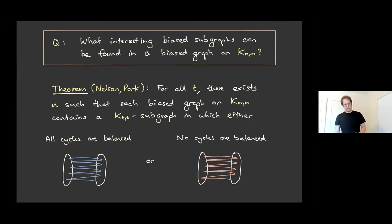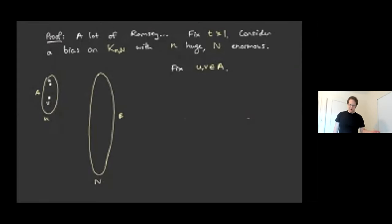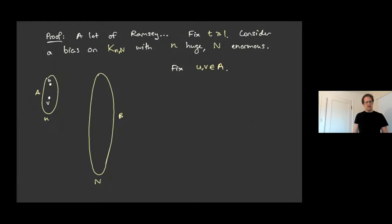I want to talk about how to prove this, because I think it's independently interesting — what do you get when you ask Ramsey questions for bias graphs? The proof isn't doing Ramsey theory in the usual way. In the usual way, you take a complete graph and assign a color to each edge. Here we're assigning a color to cycles in a way that obeys a certain property. We can't just apply Ramsey theory and be done, but we can apply Ramsey theory — we apply the usual Ramsey theorem for edge colorings of complete graphs a large number of times.